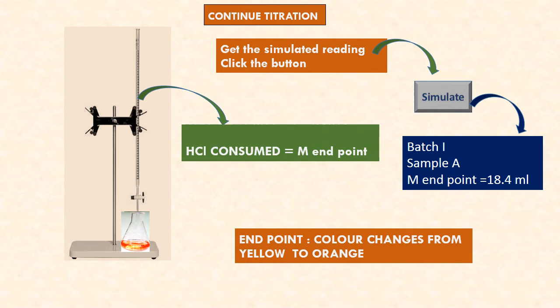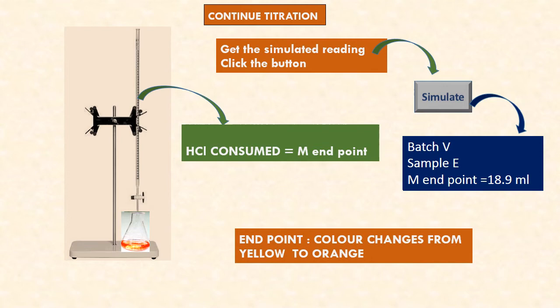Batch two, sample B: methyl orange endpoint is 19.1 ml. Batch three, sample C: methyl orange endpoint is 18.1 ml. Batch four, sample D: methyl orange endpoint is 19.3 ml. Batch five, sample E: methyl orange endpoint is 18.9 ml.